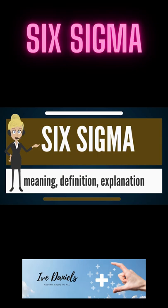3. Achieving sustained quality improvement requires commitment from the entire organization, particularly from top-level management. Features that set Six Sigma apart from previous quality improvement initiatives include: 1. A clear focus on achieving measurable and quantifiable financial returns from any Six Sigma project. 2. An increased emphasis on strong and passionate management leadership and support. 3. A clear commitment to making decisions on the basis of verifiable data and statistical methods, rather than assumptions and guesswork.